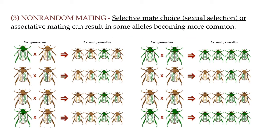A third agent of evolutionary change is non-random mating. Non-random mating happens when the chances of an individual passing on its genes in the next generation through mating is not equal. For example, some individuals in the population could have a reproductive advantage for sexual selection. Let's say that in this beetle population, brown beetles are more attractive and therefore get to reproduce more often than green beetles. As a result, the brown coloration becomes more frequent in the population after each successive generation.